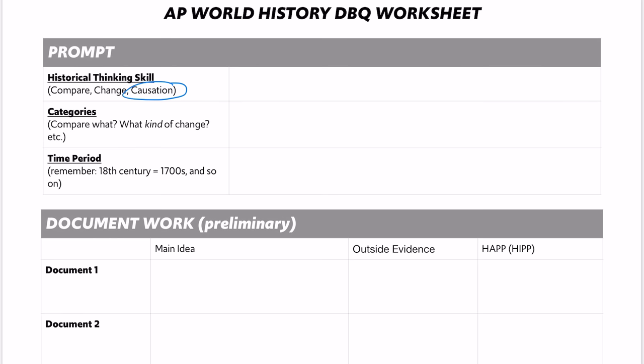Technically you might be able to use 'change' here, because you might want to explore how railroad building changed the process of empire building, but I'm going to choose causation. Next, what are the categories — what is it actually asking me about? It's asking about the process of empire building in Afro-Eurasia and specifically how railroads affected that process. And the time period is 1860 to 1918. At this point I feel like I have a pretty good idea of what they're asking me to do.